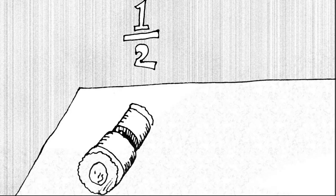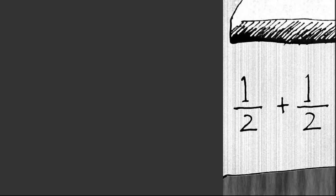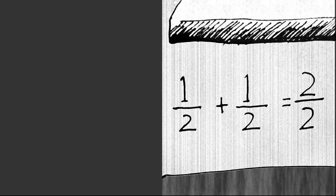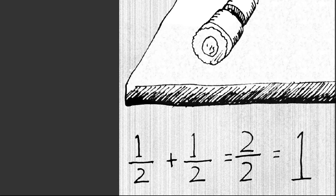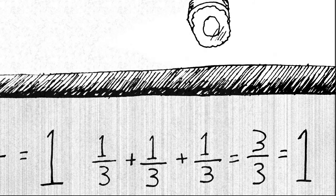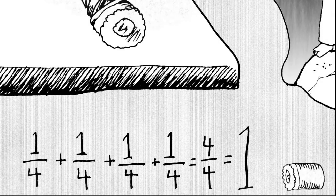Another interesting thing about fractions is what happens when we put them together. If I had one-half of my sushi roll and took the other half and put them together, how many halves do I have? Two — two over two. And that number actually equals one, which makes sense: if you cut a sushi roll into two parts and ate both, you ate the whole sushi roll. Similarly, one-third plus one-third plus one-third equals three-thirds, which also equals one. And one-fourth plus one-fourth plus one-fourth plus one-fourth equals four-fourths, which is also equal to one.